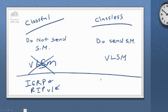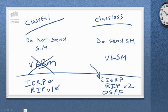Classless routing protocols — like EIGRP, RIP version 2, and OSPF — do send subnet mask information, and we can take advantage of variable length subnet masking. All of our more modern protocols are going to be superior. So it pays here to be classless.